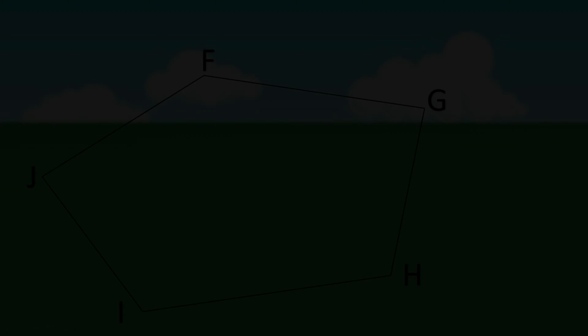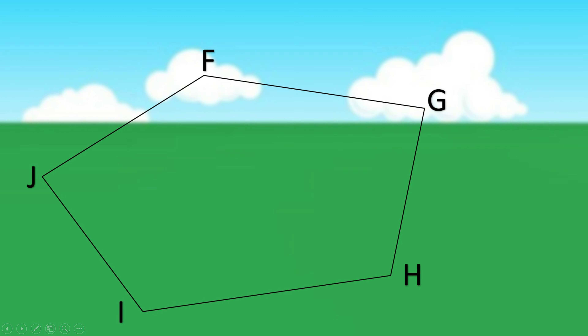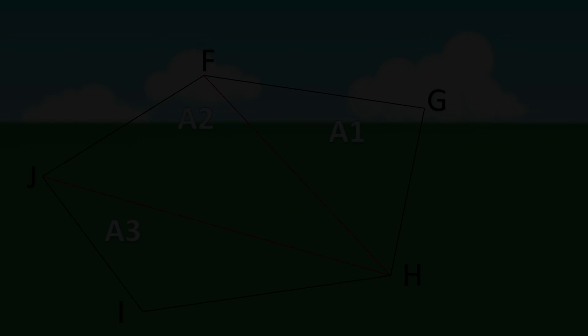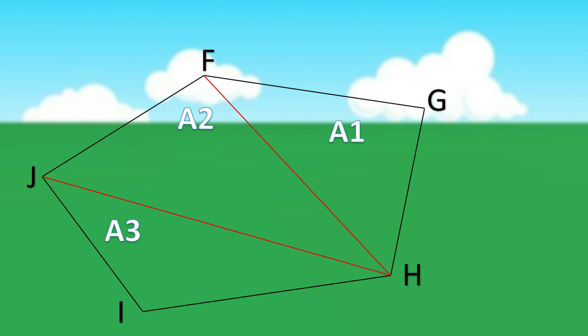Area determination by two sides and an included angle. The same field described in area determination by base and altitude will be used for this method, but change the designations of the corners — use points F, G, H, I, and J instead. Divide the polygon into three triangles and label them A1, A2, and A3.